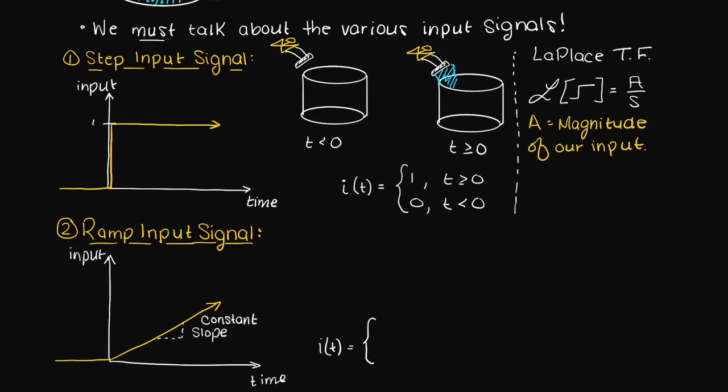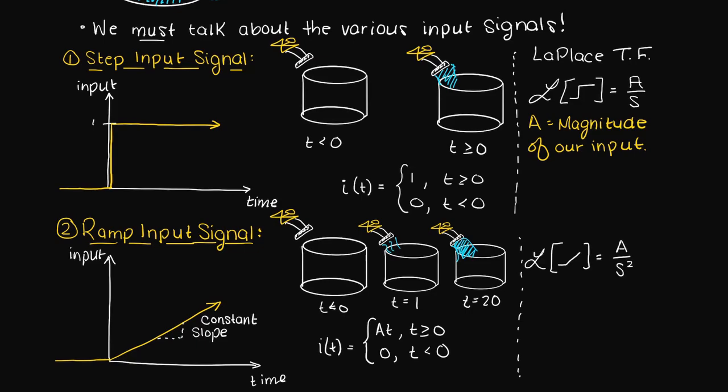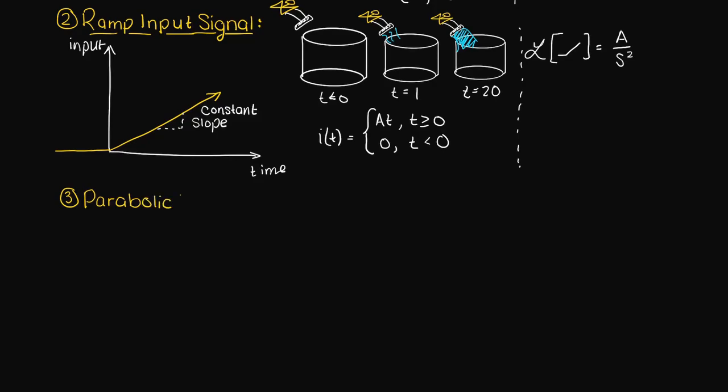We represent the ramp input signal like this. Going to our bucket example you can imagine that at time zero we have no incoming water. At time one there is some and then by the time we get to say 20 seconds we have the tap running very fast. The Laplace transform of a ramp input is the slope of your ramp over s squared.